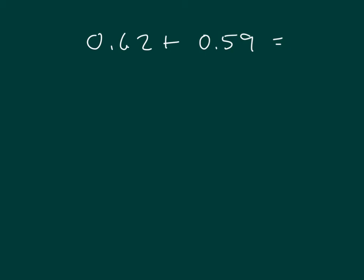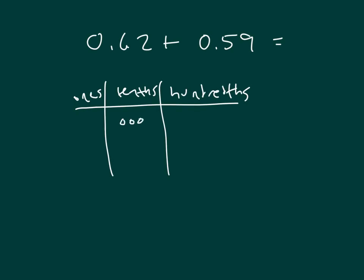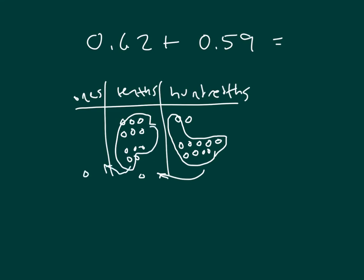Let's use disks on our place value board to solve this, along with numbers. Model the first number, 6 tenths, with 2 hundredths. Our second number, 5 tenths, 9 hundredths. We can regroup from our hundredths place. And we can also regroup. There's our regroup from the tenths place. So we have 1.21 as our answer here.